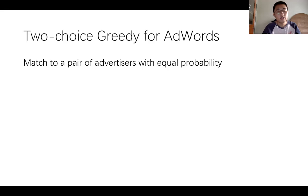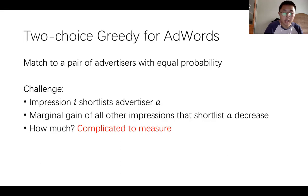With equal probability, the algorithm gives a matching size of 1 and 2 in the Z-graph instance. The first attempt is to borrow the idea of involving randomness to the AdWords problem. Similarly, we consider a two-choice greedy for AdWords: we match each impression to a pair of advertisers with equal probability. However, if an impression shortlists an advertiser A, the marginal distribution of all other impressions that shortlist A will decrease. The challenge arises that it is complicated to measure this decrease.